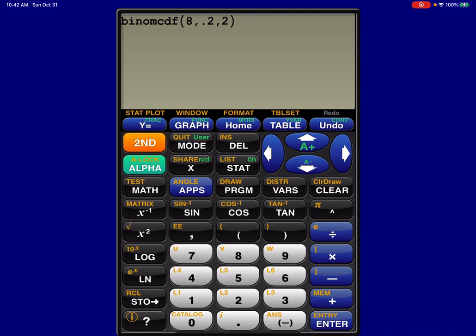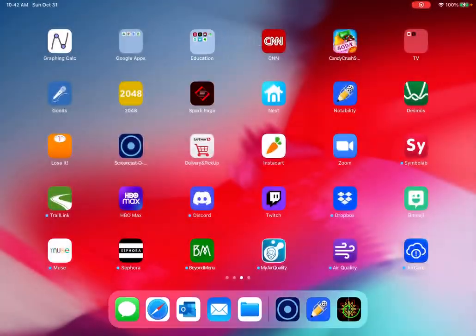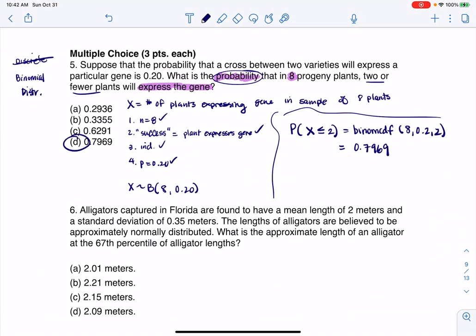And again, take a look that it's binomial CDF, right? It's a cumulative density function, not PDF for a particular value. And there's 0.7969. Alright, so if I head back in here, there's my answer, okay?